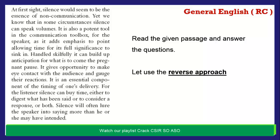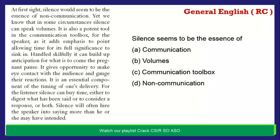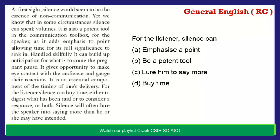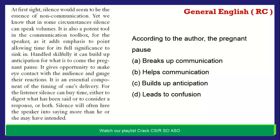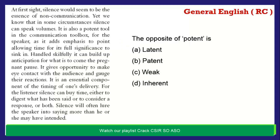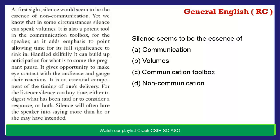Now let's see a sample passage using the reverse approach. First we look at the question: 'Silence seems to be the essence of ___' — with four options including 'non-communication.' Reading the first line of the passage, we can immediately conclude: 'silence would be seen to be the essence of non-communication.' So the correct answer is option D — non-communication. This is the reverse approach in action — linking your reading straight away with the question.